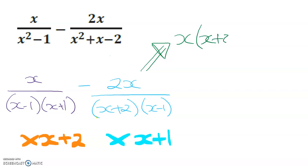So what I end up with is x times (x+2) minus 2x times (x+1) all over (x-1)(x+1)(x+2).